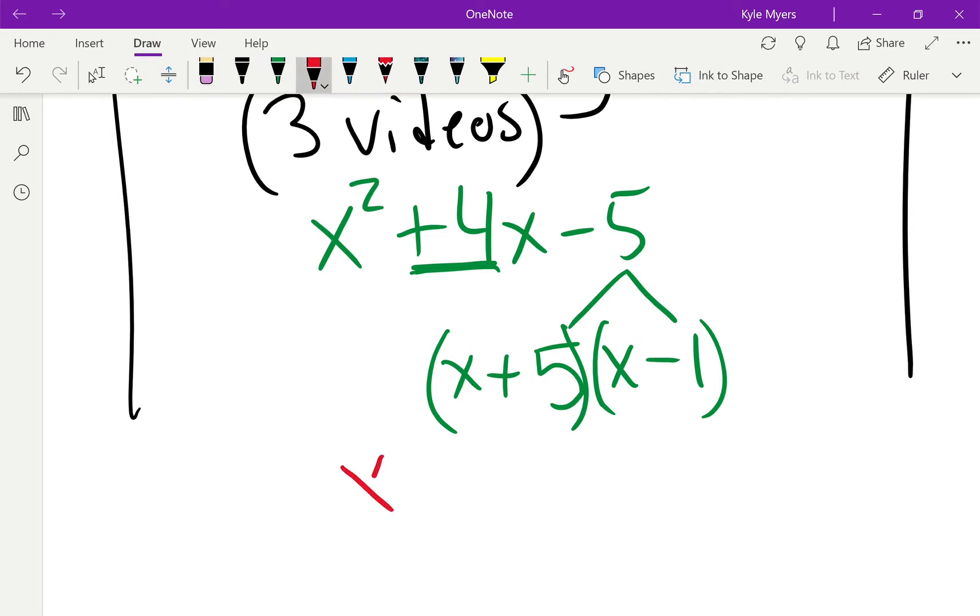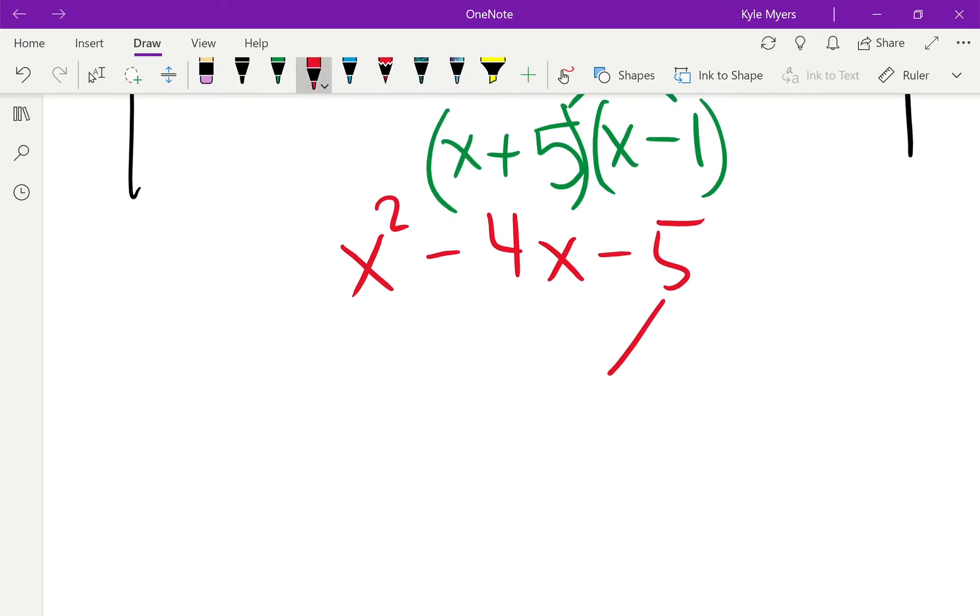And the next problem we have today is going to be almost identical, right? So it's a minus 4x instead of a positive 4x, which means that I still need 5 and 1, but this time I need the 5 to be negative.